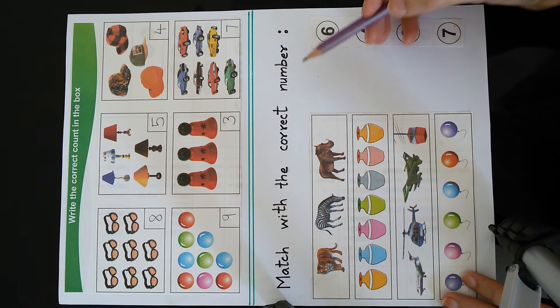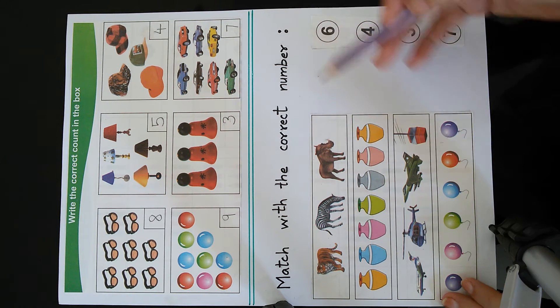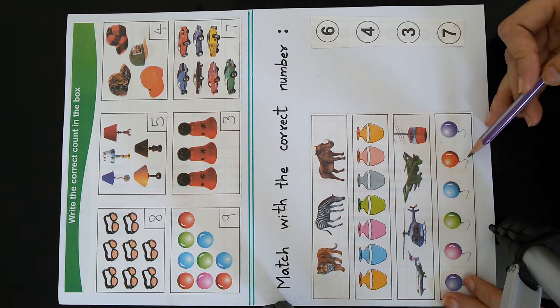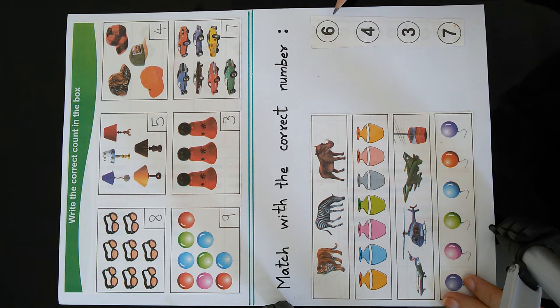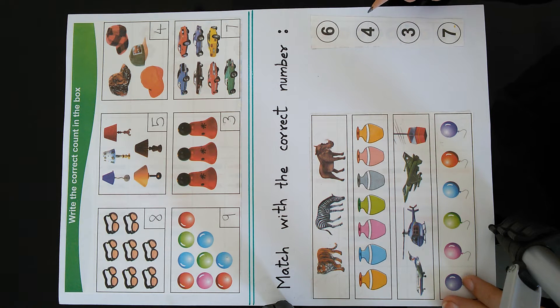Now we have the next question. Match with the correct number. Here we can see there are some pictures. And in the second column we have the numbers. So we will count the picture and match to the correct number.